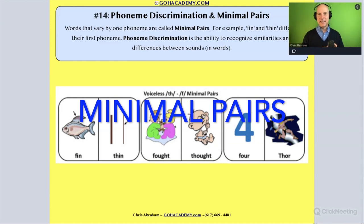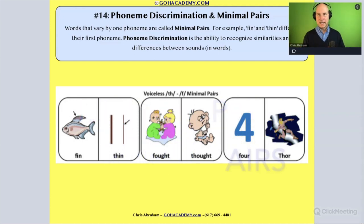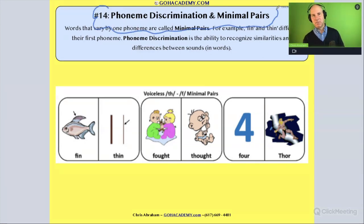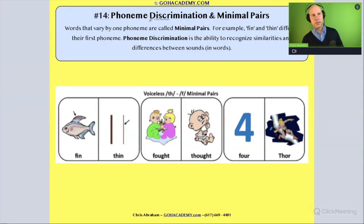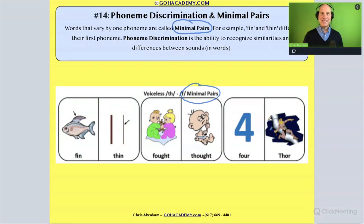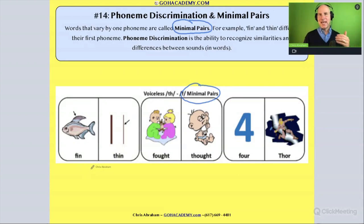This is the last idea in this unit on phonological and phonemic awareness, involving phoneme discrimination and minimal pairs. A minimal pair refers to words that differ by one phoneme — they sound very similar but differ by just one sound, like 'fin' and 'thin.'